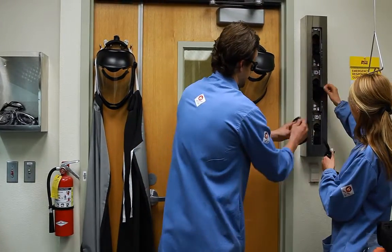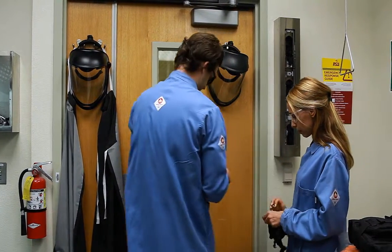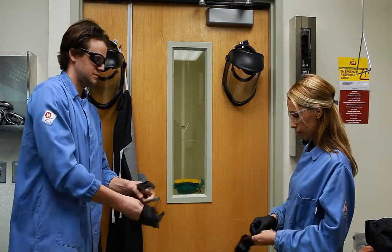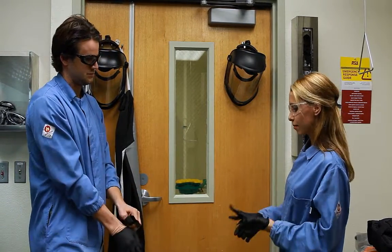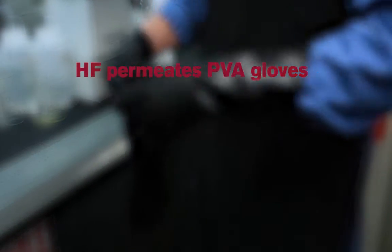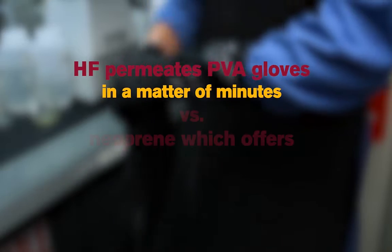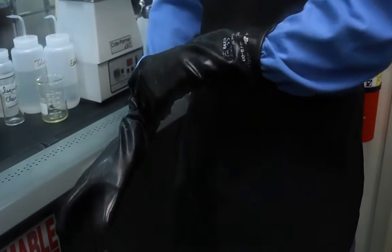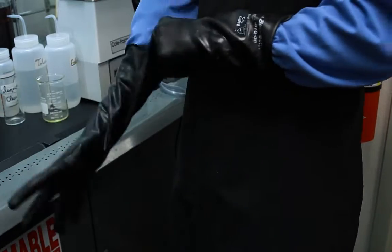Each set of gloves must be inspected prior to use, checking for defects such as holes or tears. HF permeates many types of glove materials aggressively. Therefore, using a compatible glove type is critical. For example, HF permeates PVA gloves in a matter of minutes versus neoprene, which offers greater protection. It is strongly recommended you double glove whenever working with HF.